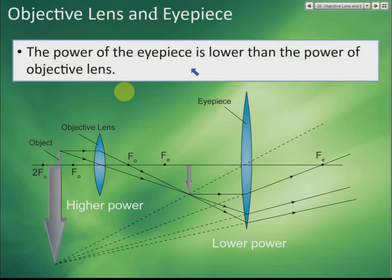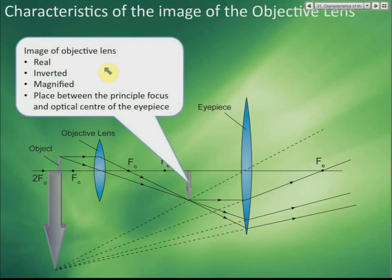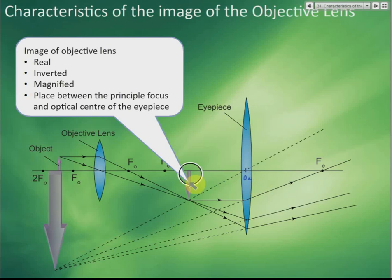The power of the eyepiece is lower than the power of the objective lens — this is the opposite of the telescope. If you place the object between f and 2f of the objective lens, the image you get is real, inverted, and magnified. This image is then placed between the principal focus and the optical center of the eyepiece — that is, between O and f — so that you get a magnified and virtual final image.